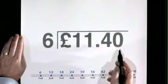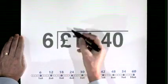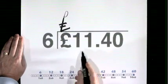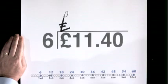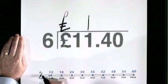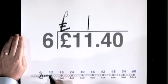£11.40 divided by 6. 6 goes into 11, 11 lives here 1 time. Remainder 1, 2, 3, 4, 5.